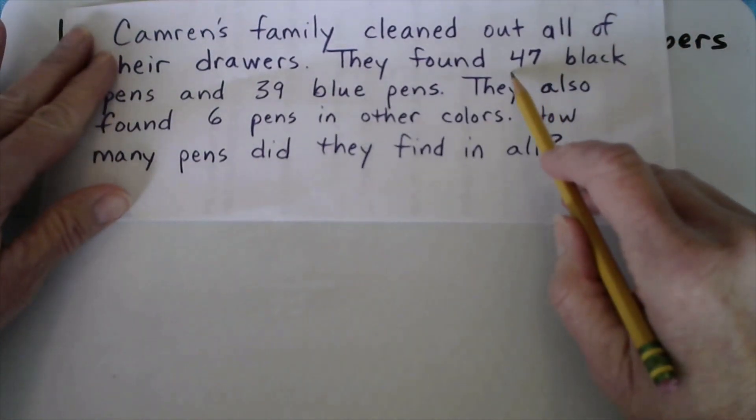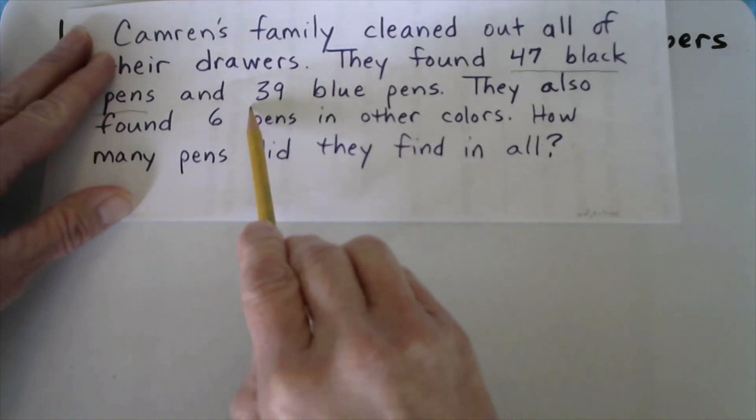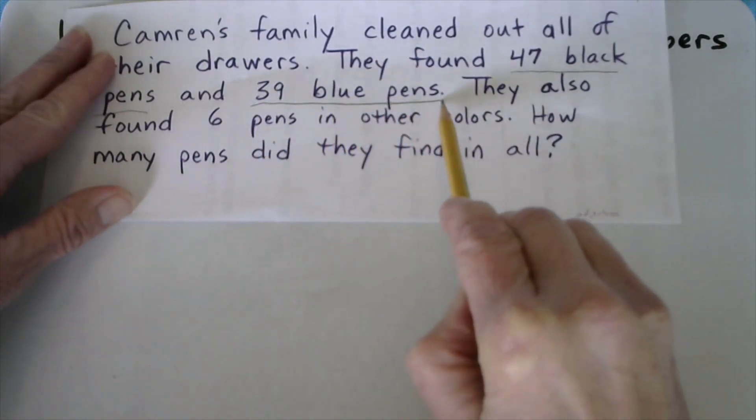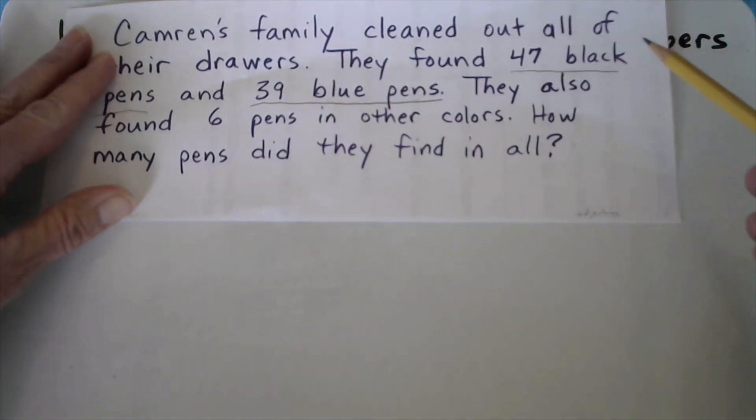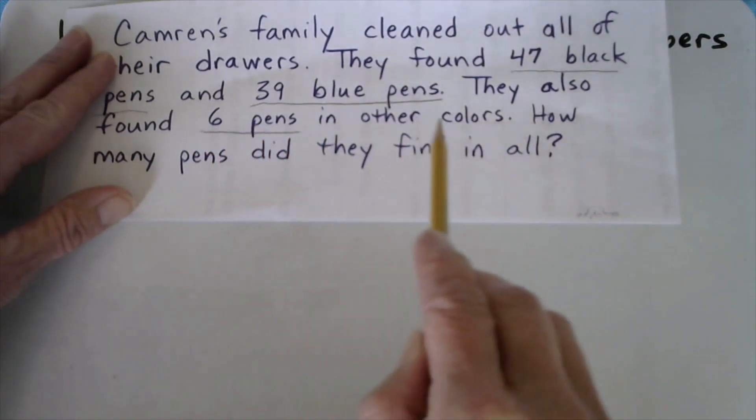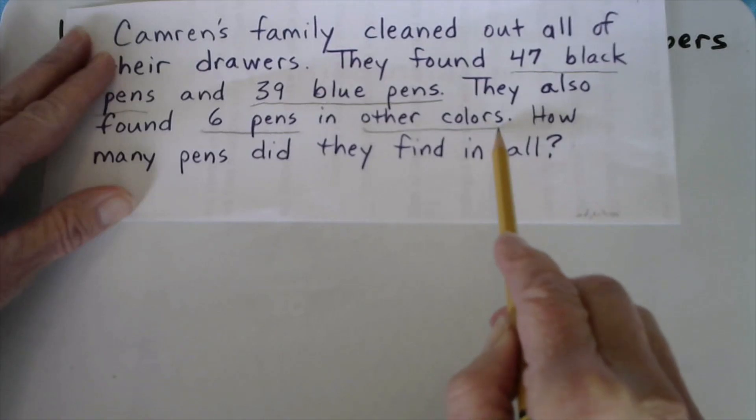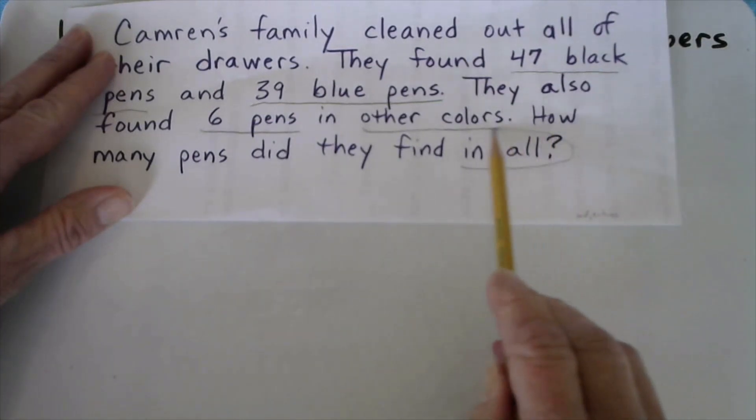So this number 47 is actually an adjective describing black pens. This 39 is an adjective describing blue pens because numbers are real things. In this case, the numbers are actual pens. And then this number 6 is an adjective describing pens in other colors. And then sometimes there will be a clue or several clue words about what the operation is going to be, but not always. Sometimes you'll have to infer that. But in this case, we do see clue words. We see 'in all.'